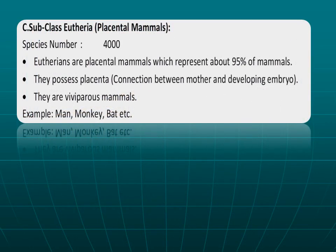The last subclass is Eutheria, meaning true mammals, also known as placental mammals. About 4,000 species of mammals belong to this subclass. Eutherians represent about 95% of all mammals. They possess a placenta — a connection between the mother and the developing embryo. They are viviparous. Examples of eutherian mammals include man, monkey, and bat.